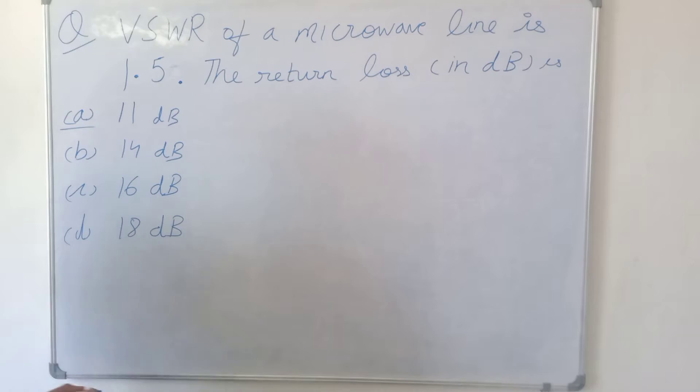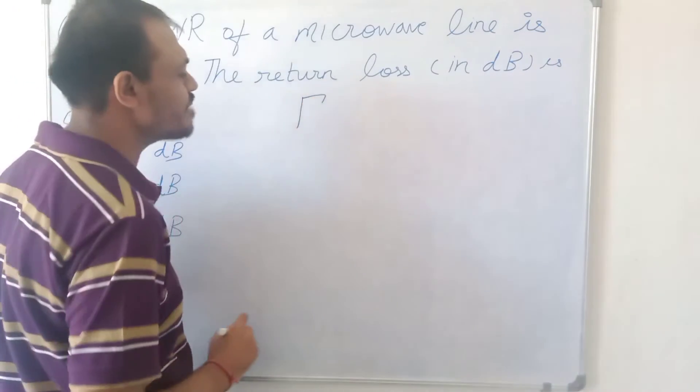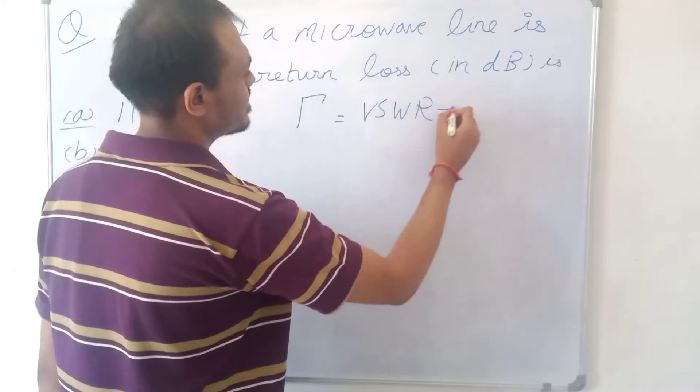To calculate the return loss, first we have to calculate the reflection coefficient. The reflection coefficient is given by tau. Tau equals VSWR minus 1 over VSWR plus 1.